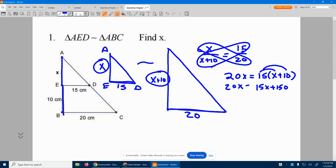So 20X equals 15X plus 150. I'm going to move my 15X over to be on that side with the other X. So I subtract 15X from both sides. 5X is equal to 150. I now divide by 5.